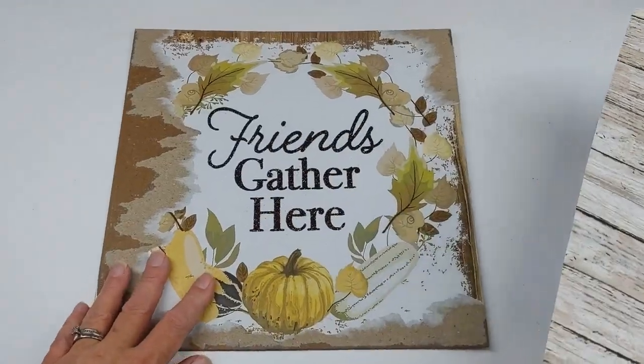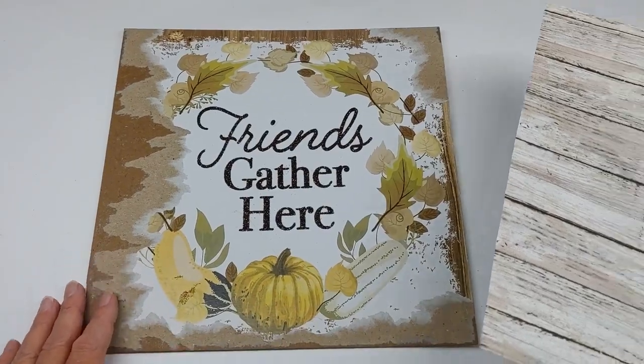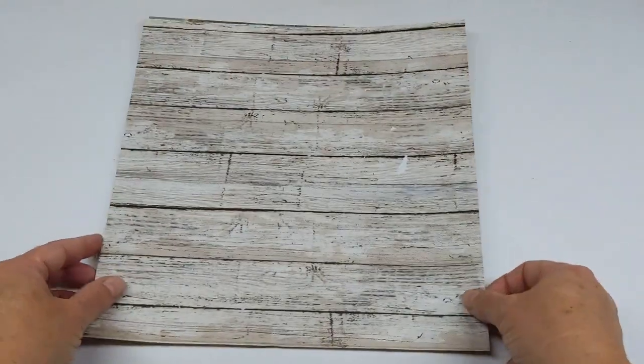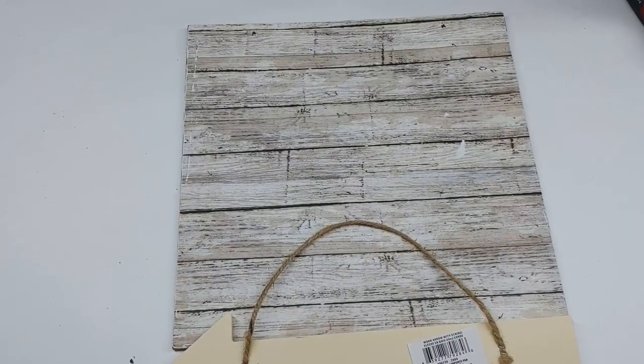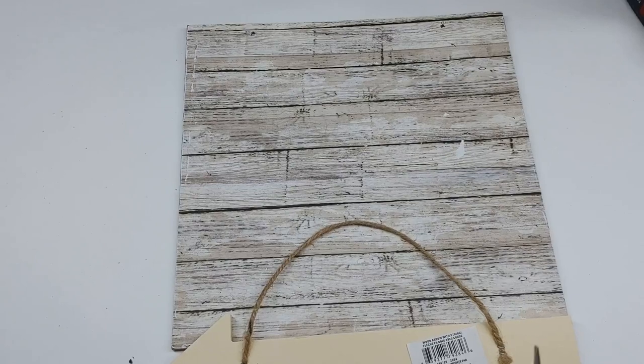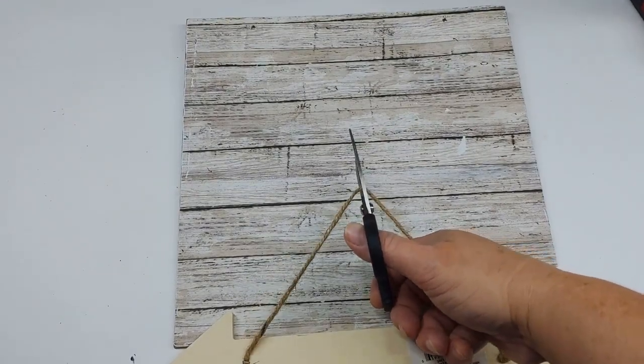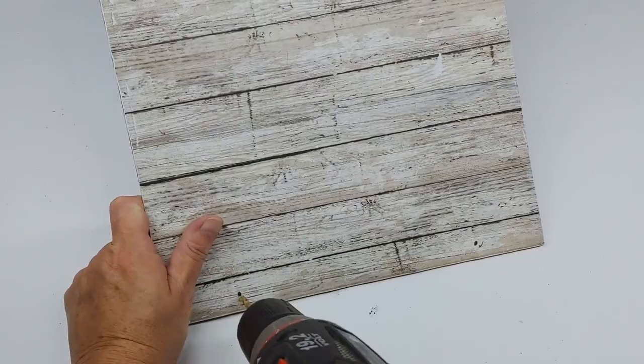For the fourth DIY, I took a sign from Dollar Tree and some paper from Hobby Lobby and just glued it down. To attach the wood arrow that I also got from Dollar Tree to the bottom, I'm going to cut the jute twine, then mark my spots where I want to drill my holes.